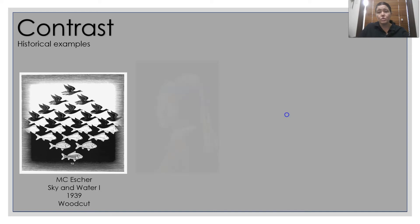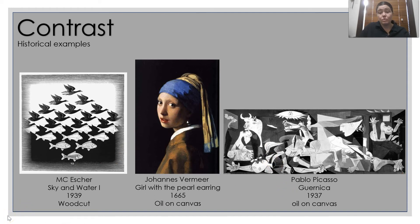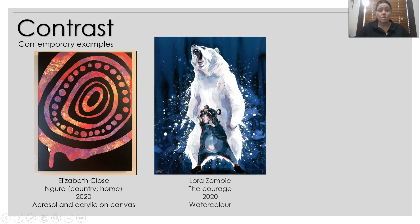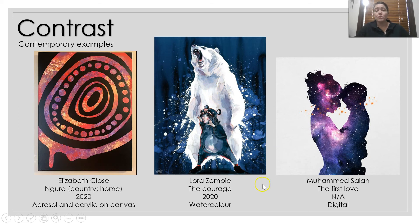Some historical examples of contrast: we have Escher's work, which is a metamorphosis work between the fish and the goose, also showing some positive and negative shape. We've got Vermeer's Girl with a Pearl Earring — the skin of the woman against the darkness of the background. And also Guernica, which is showing multiple examples of contrast. Some contemporary examples: Elizabeth Close with the dark against the light with beautiful colours; Laura Zombie showing the girl in a darker costume against the white polar bear against a dark navy background.